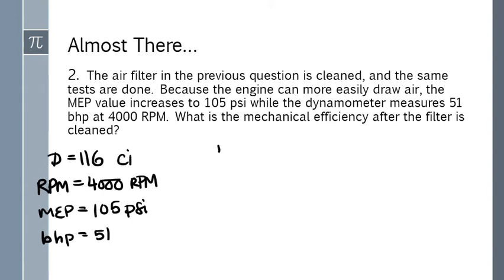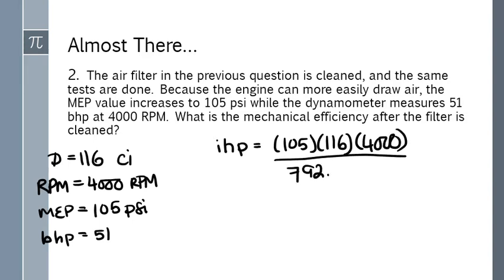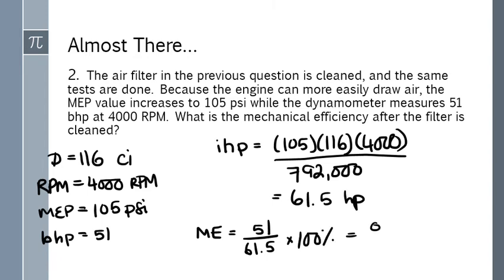So the same thing. Start with indicated horsepower, the new MEP times the same displacement and engine speed divided by 792,000, should give you 61.5 horsepower. Next we find the mechanical efficiency, brake horsepower divided by indicated horsepower times 100 percent, about 83 percent. So not a big change but we did go up one percent for the mechanical efficiency.